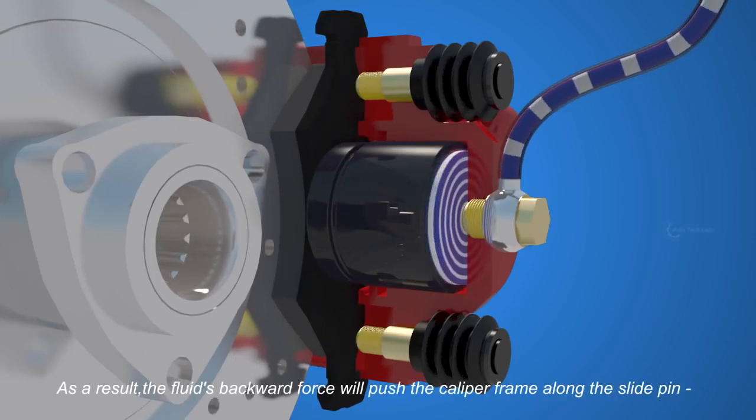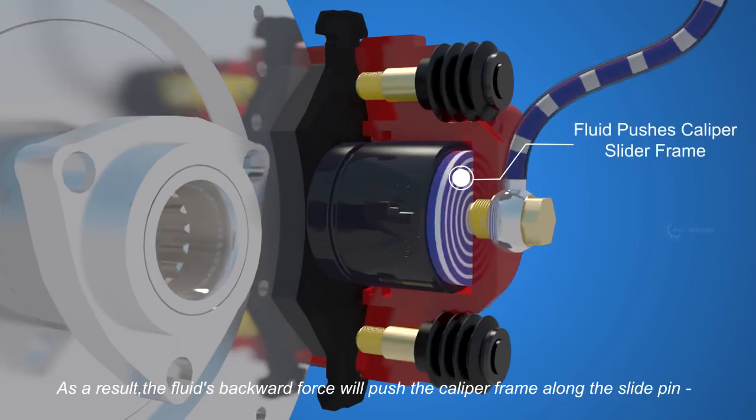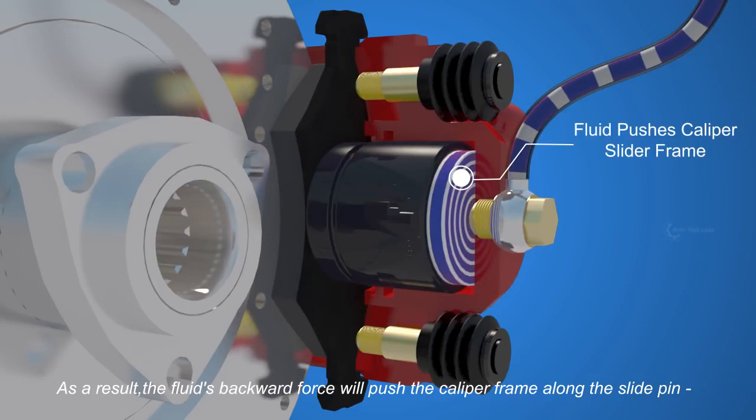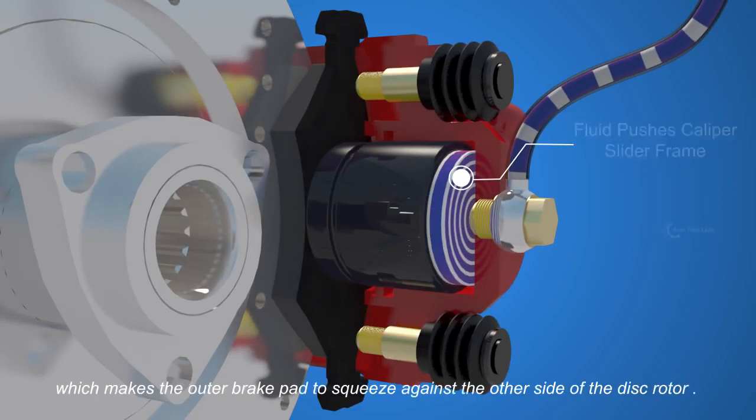As a result, the fluid's backward force will push the caliper frame along the slide pin, which makes the outer brake pad to squeeze against the other side of the disc rotor.